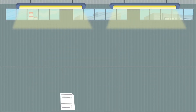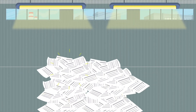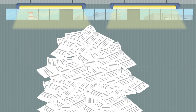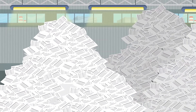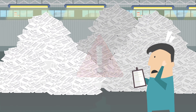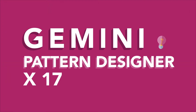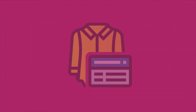It is common for producers of sofas to store a few hundred possible style versions for each model they produce. To create and manage these hundreds of versions is labor intensive and a permanent source of errors. Gemini Pattern Designer 17 comes with a radical solution for this problem by introducing the new Style Selector module.